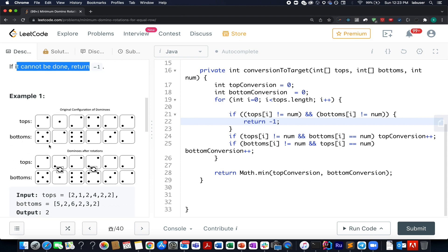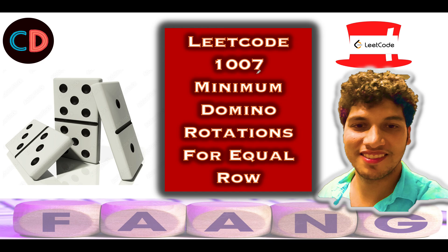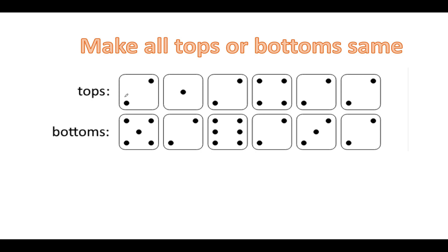They have provided us with an example, and I'll be walking you through this example as well as the algorithm via the presentation. So let's quickly hop onto it. LeetCode 1007, Minimum Domino Rotations for Equal Row. Taking the same example from the problem — what we need to do is make all the tops or bottoms the same, and we can perform a rotation to achieve this.